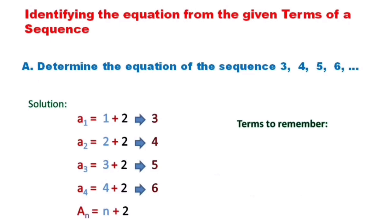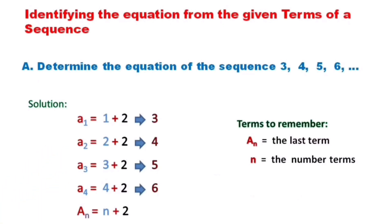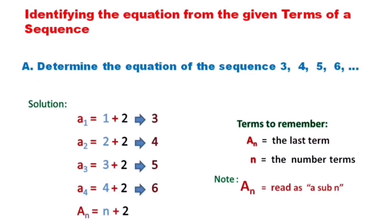Important terms to remember: A sub n is the last term. N is the number of terms, such as A sub 1, A sub 2, A sub 3, and so on. Note that this notation is read as "A sub n."